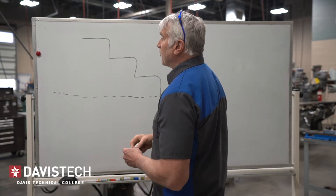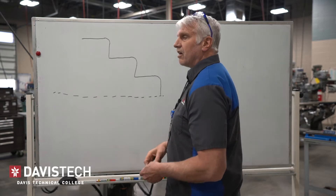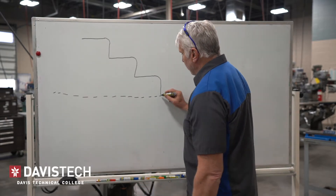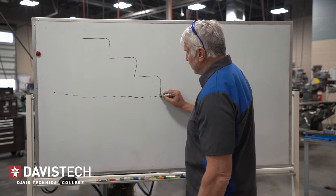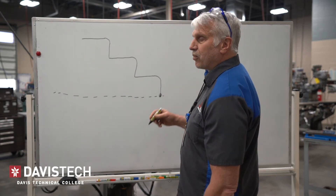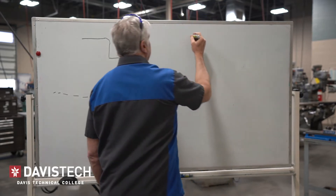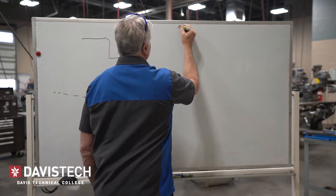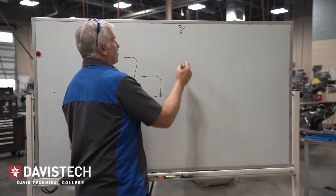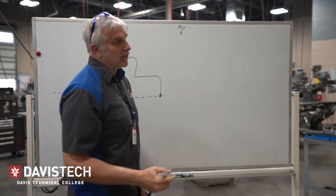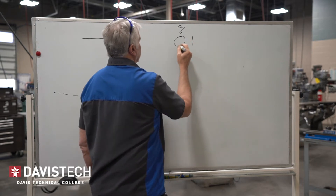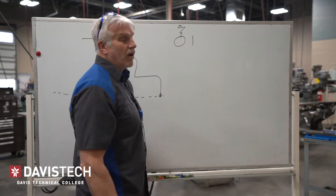First thing we want to do is we'll have our part in our chuck. We're going to call this point right here zero, zero. So when we start writing our program, the very first thing we're going to do is put a percent symbol. For the starting of our program, we've got to give our program a number. In this particular case, we'll call it O1 — this is the letter O and the number one.